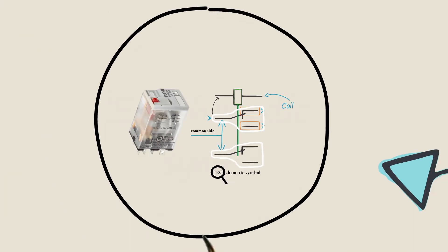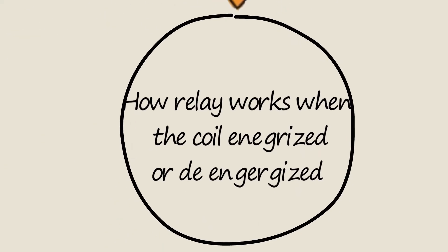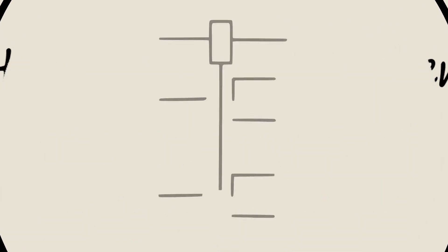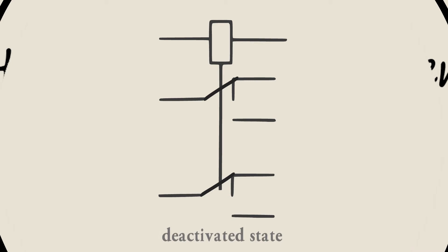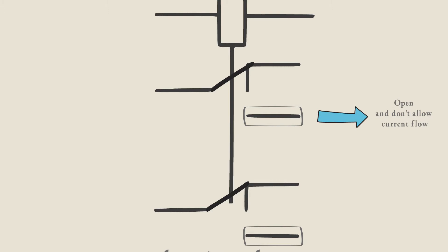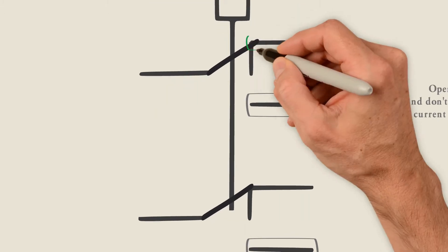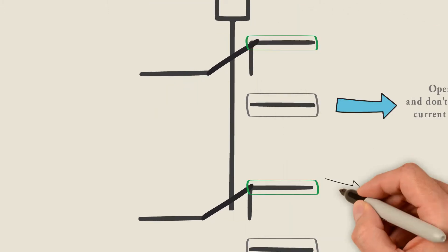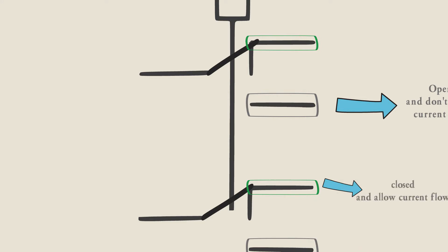Let's see how the relay works when the coil is energized and de-energized with this IEC schematic symbol. In the deactivated state, when the coil is de-energized, the normally open contacts are open and don't allow current flow, and the normally closed contacts are closed and allow current flow.